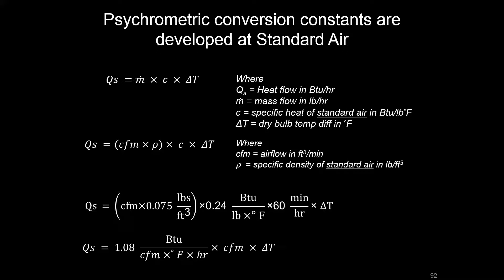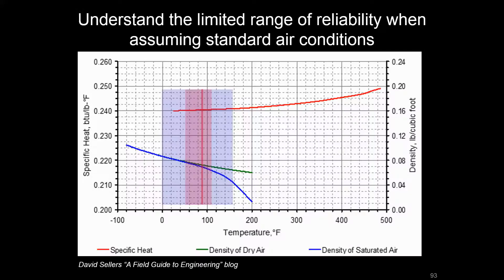But does that really apply in all cases? How much can we depend on that number? Well, this is a pretty handy graph that kind of steps through how those constants change when you look at different temperatures. So what the density of air and what the specific heat of air actually is for dry and saturated air, as well as specific heat over a range of temperatures.